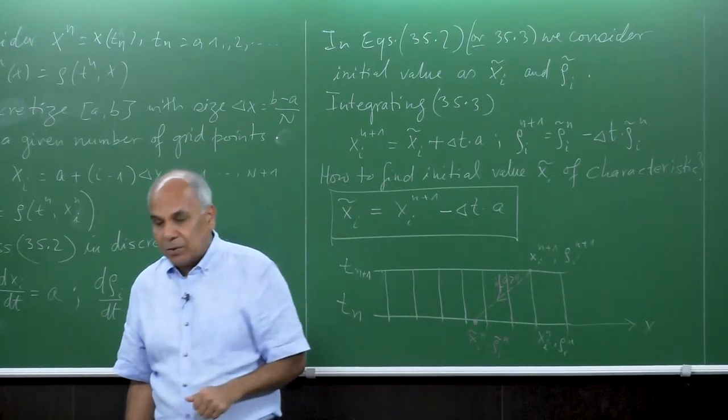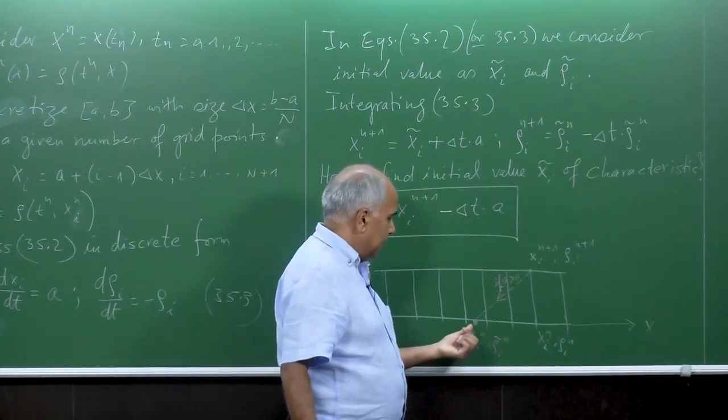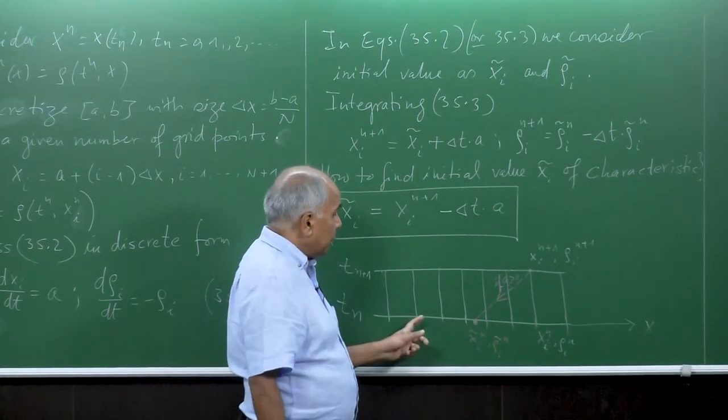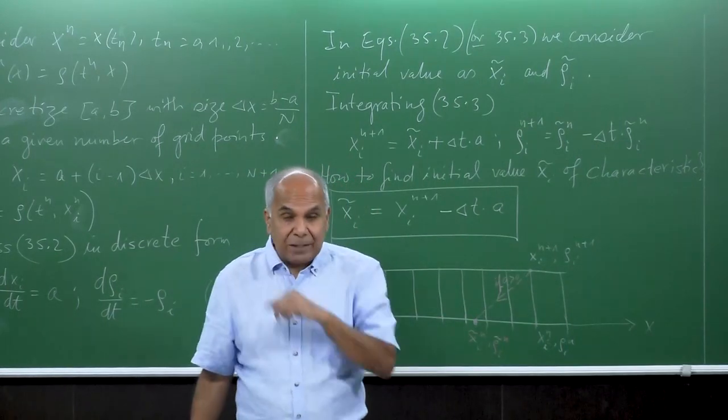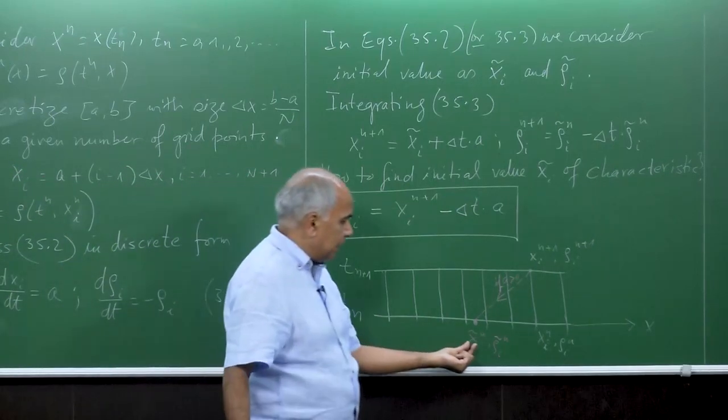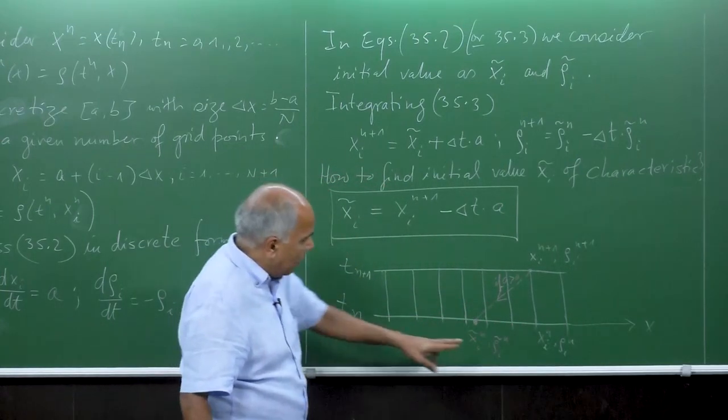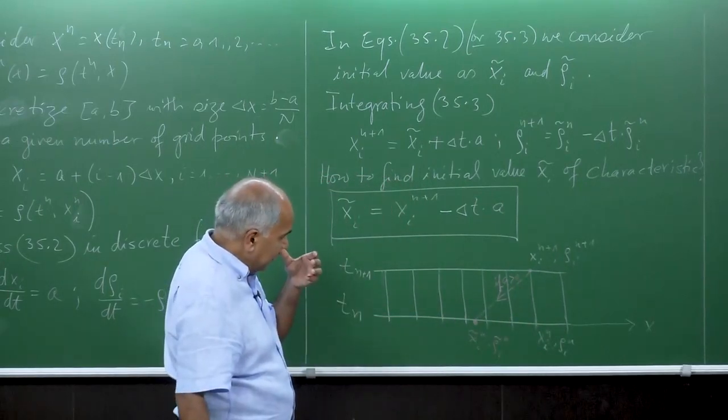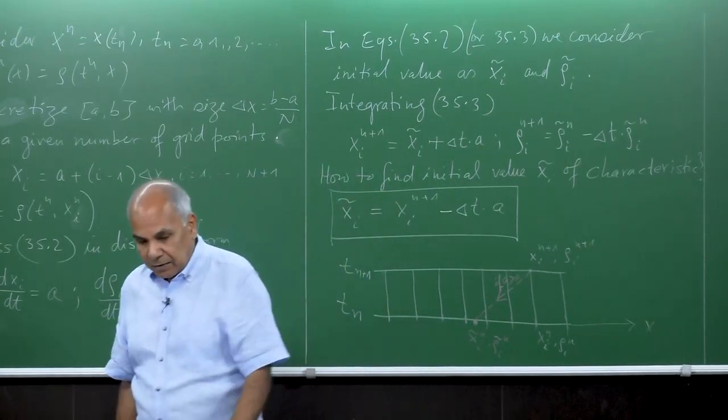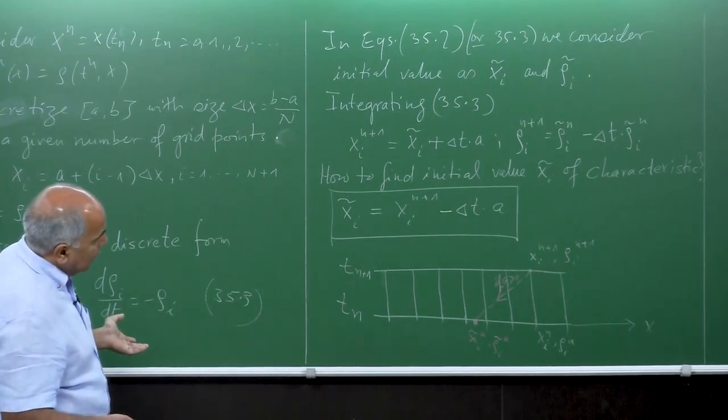Now how to get this? With the moving least square method. You sit at the point x i tilde, look its neighbor inside the domain left and right, and then you do the moving least square approximation - do the Taylor expansion, minimize the error, then finally you get the interpolated value rho i tilde n at x i tilde.